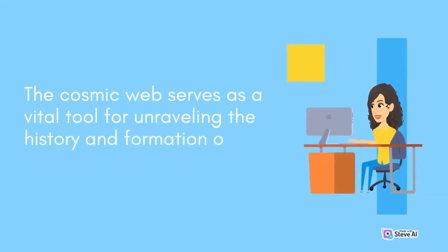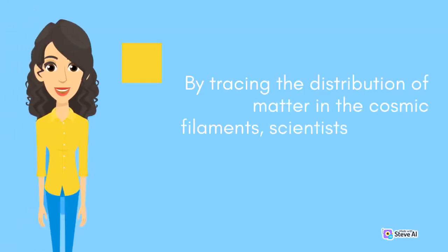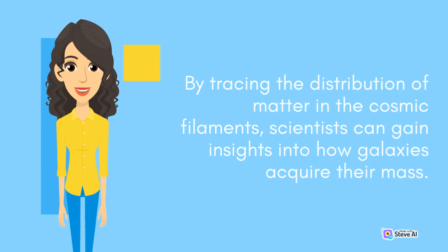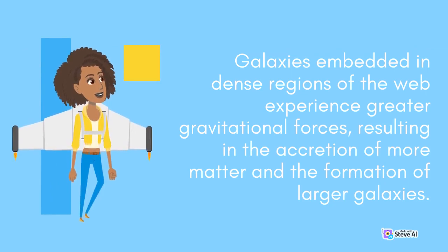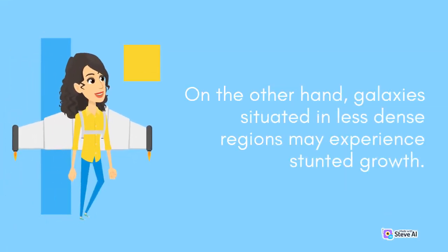The Cosmic Web serves as a vital tool for unraveling the history and formation of galaxies. By tracing the distribution of matter in the cosmic filaments, scientists can gain insights into how galaxies acquire their mass. Galaxies embedded in dense regions of the web experience greater gravitational forces, resulting in the accretion of more matter and the formation of larger galaxies. On the other hand, galaxies situated in less dense regions may experience stunted growth.